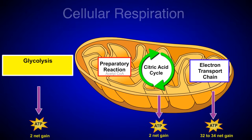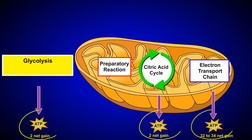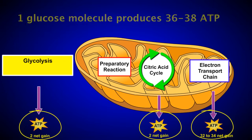If we add up all the ATP produced from just one glucose molecule, we can see that these reactions produce a total of 36 to 38 ATP.